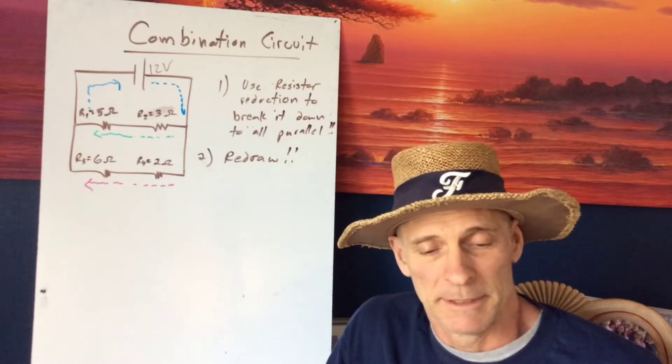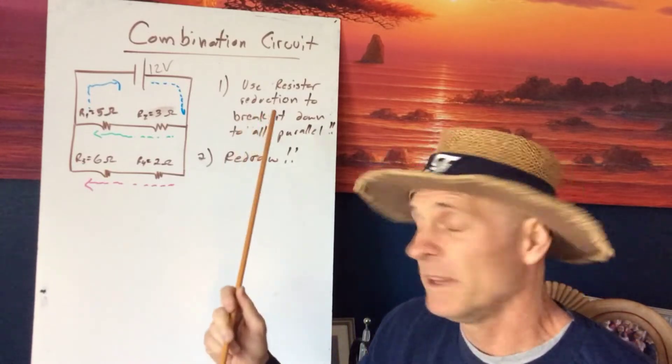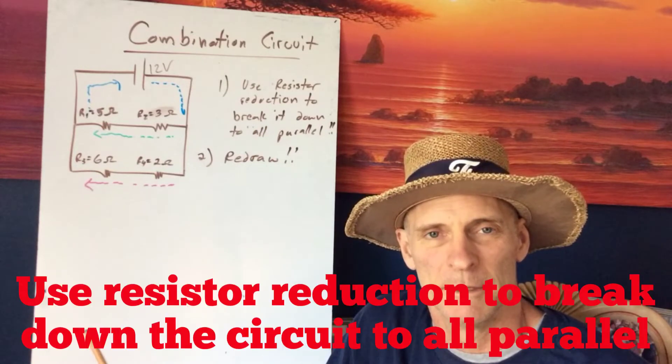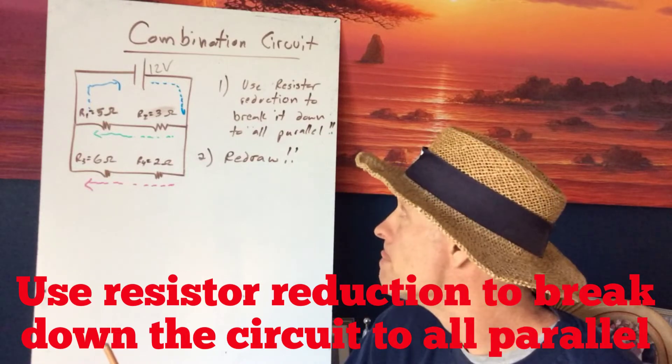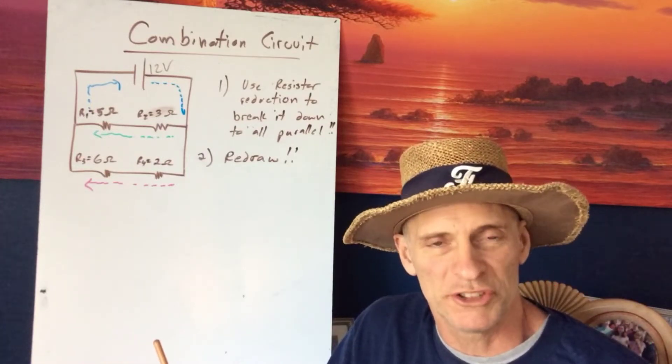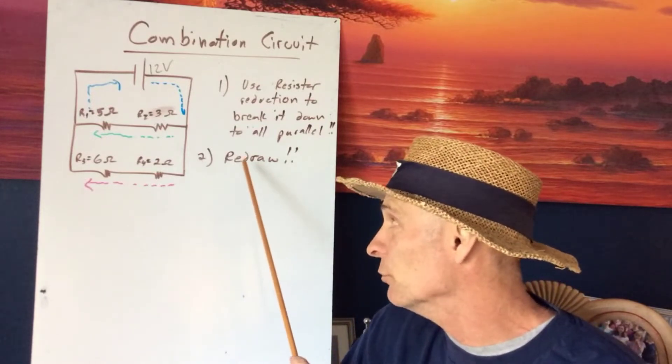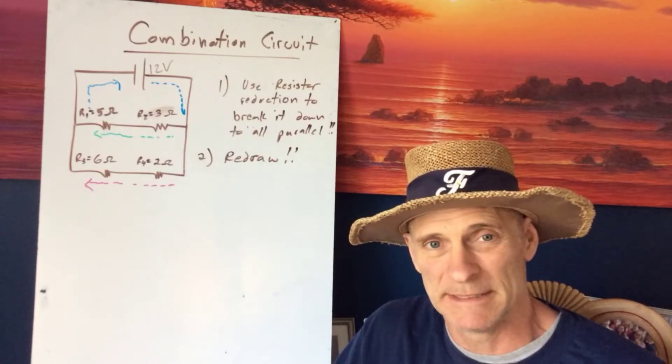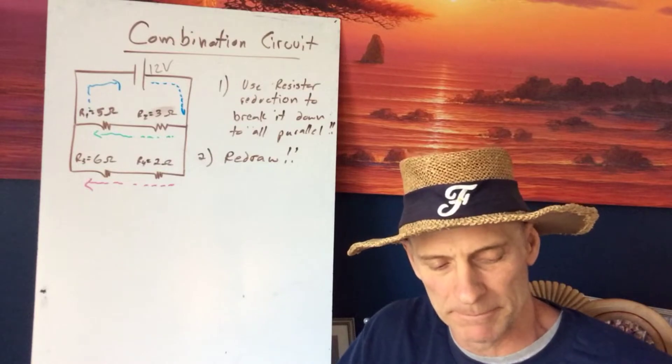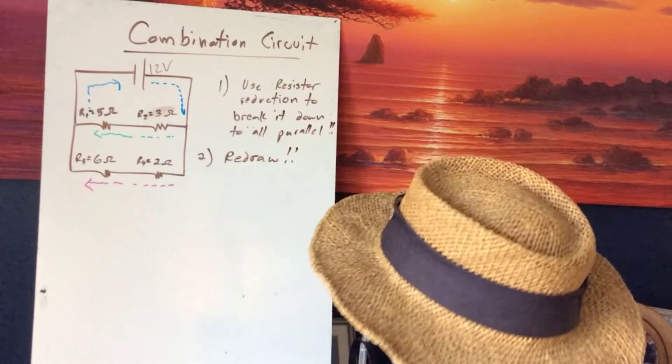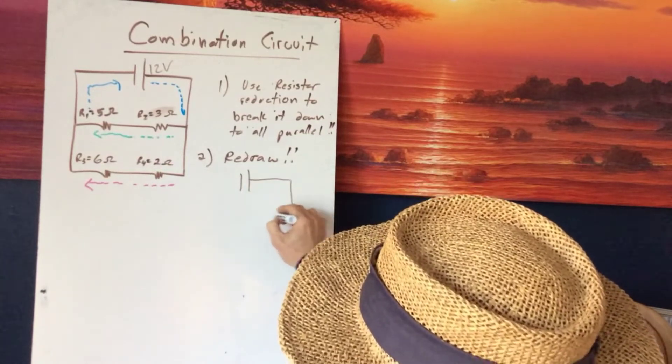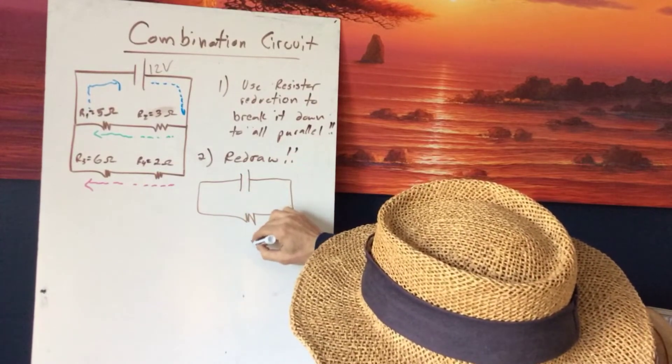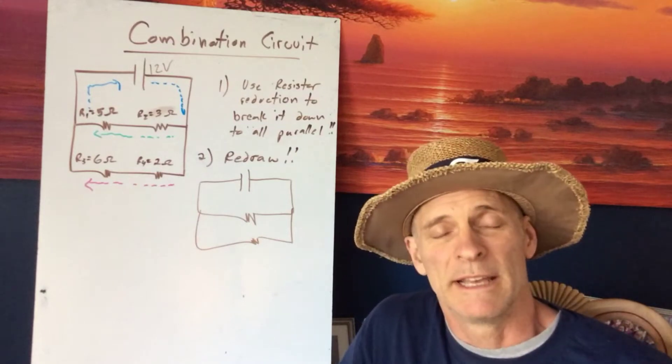How do we approach a problem like this? The number one thing is, we're going to use our method for resistor reduction to break the circuit down until we have only one all-parallel or all-series set up. We need to redraw the circuit to make that happen. So, I'll do that right now.